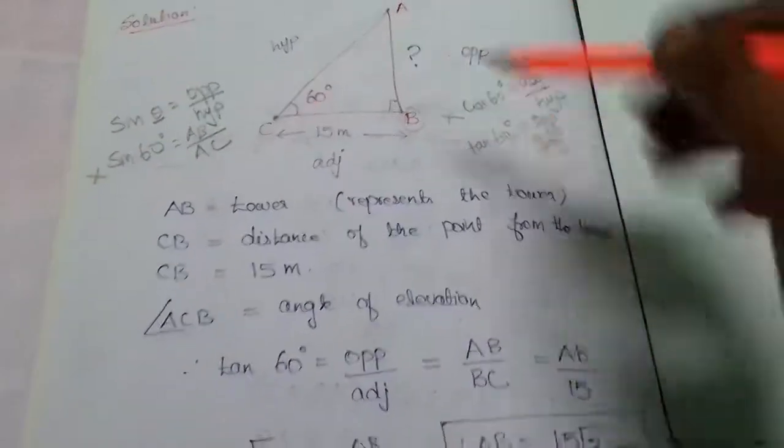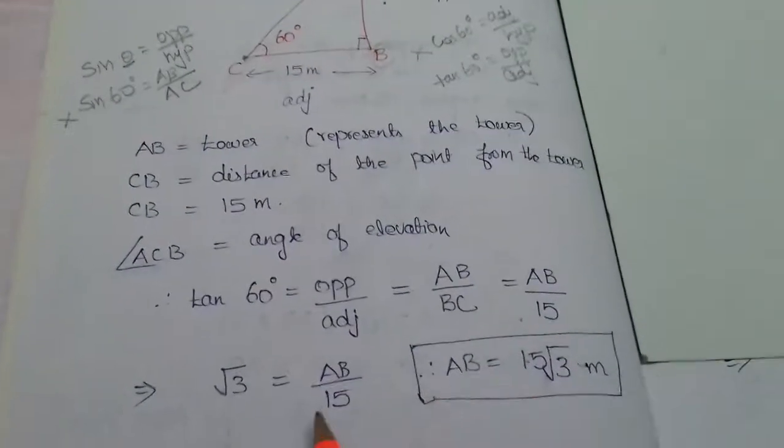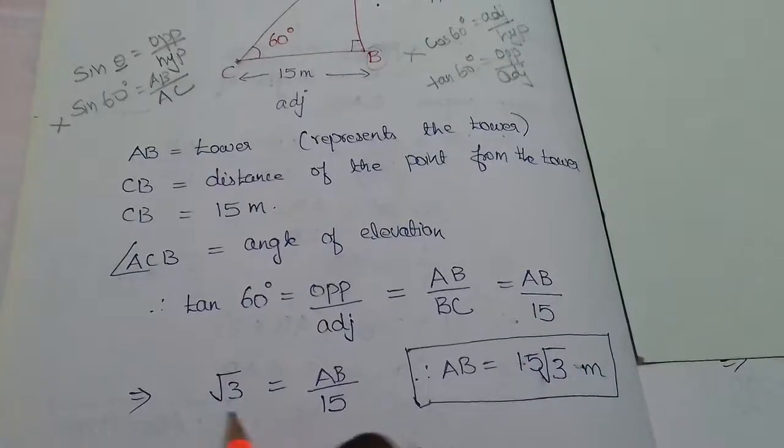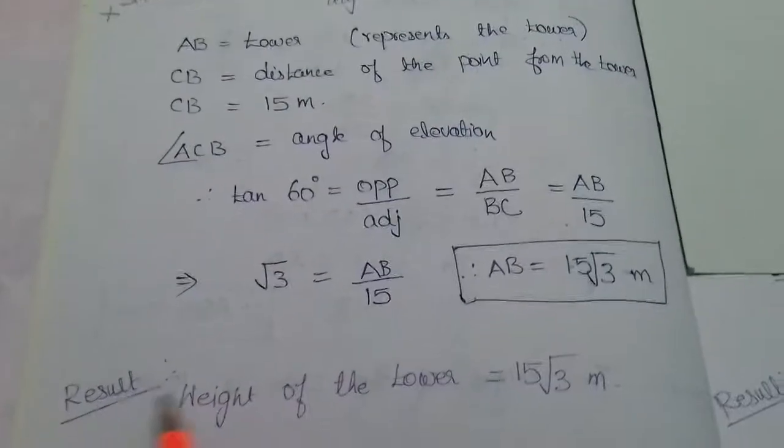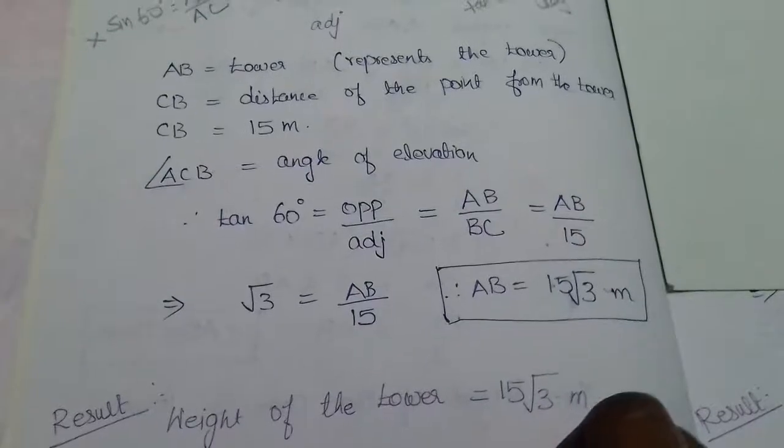So values height of the tower, AB is equal to 15 root 3 meters. So the result, height of the tower is equal to 15 root 3 meters.